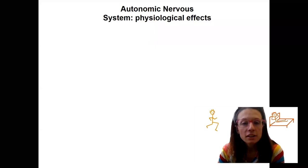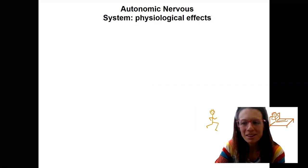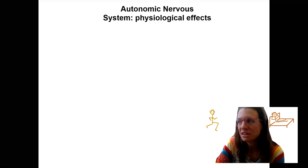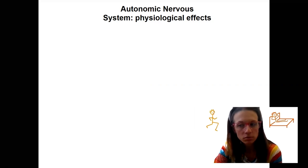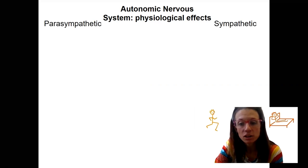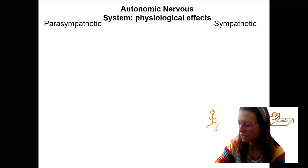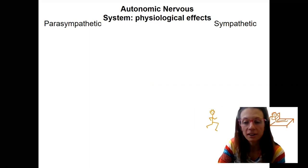Let's talk about the physiological effects of autonomic nervous system activation — what happens when one of the two divisions kicks in. The two divisions of the autonomic nervous system are the parasympathetic nervous system and the sympathetic nervous system.